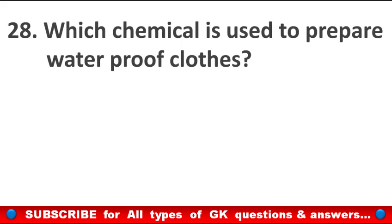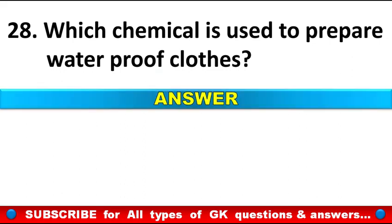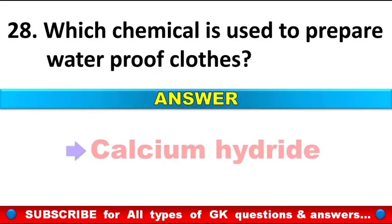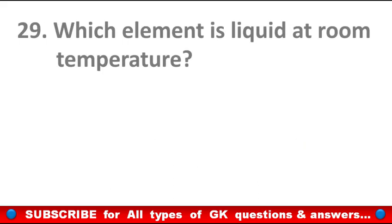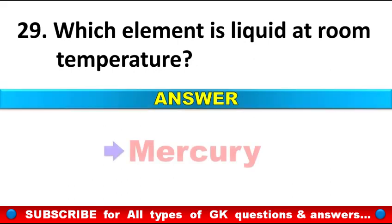Which chemical is used to prepare waterproof clothes? Answer: Calcium hydride. Which element is liquid at room temperature? Answer: Mercury.